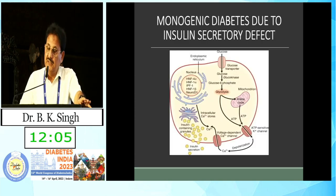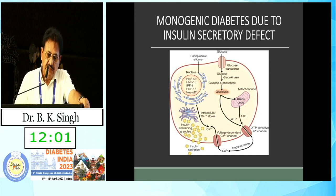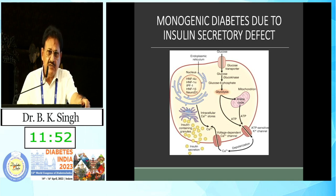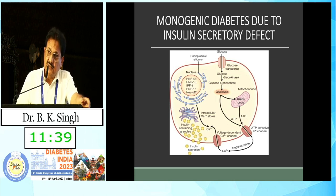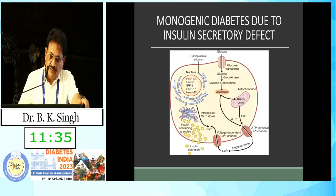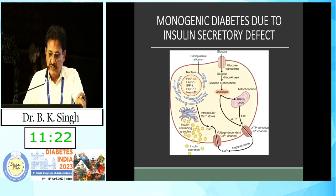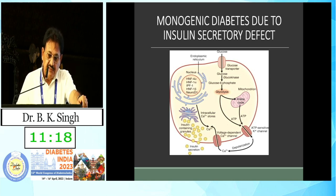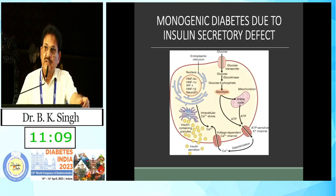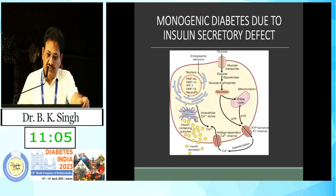Looking at defects of insulin secretion: glucose is transported into the cell via glucose transporters and converted by glucokinase. Glycolysis then occurs through the Krebs cycle in the mitochondria, leading to ATP generation. ATP opens the ATP-sensitive potassium channel, leading to depolarization of cells, opening voltage-dependent calcium channels. Increased intracellular calcium concentration triggers insulin-containing granule release in the pancreatic beta cells.